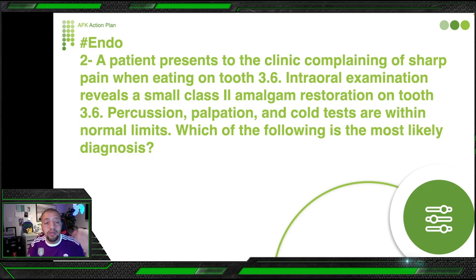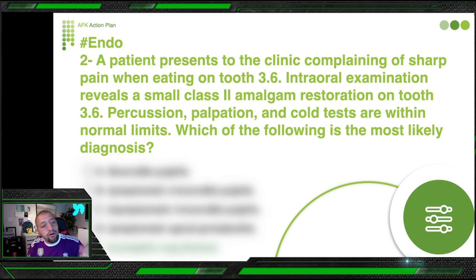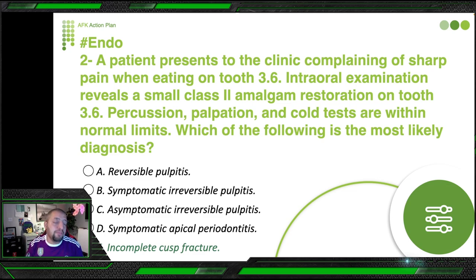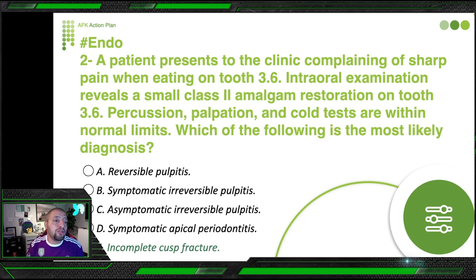In the first question we discussed this. So please, when you read a question, don't pick reversible pulpitis because you don't know the other option — cold test is within normal limits. Don't pick symptomatic irreversible pulpitis either, because that requires different criteria. Symptomatic apical periodontitis? No, because percussion is normal. So the answer is incomplete cusp fracture.